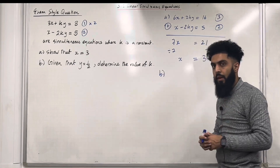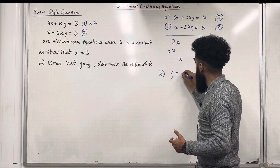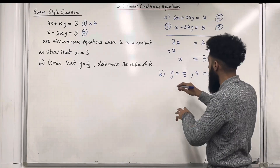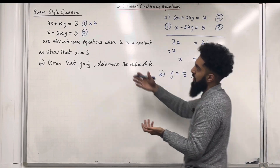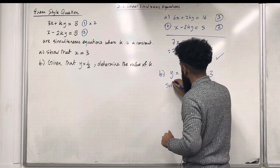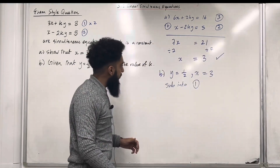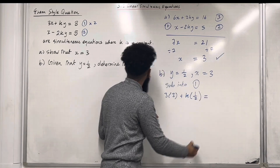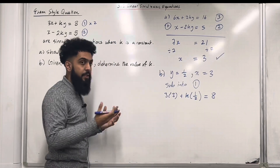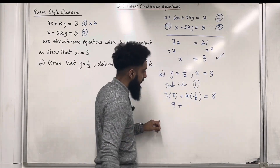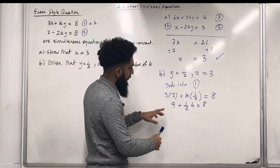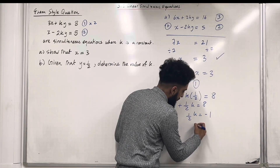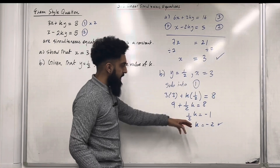Moving on to Part B. Given that y is equal to one half, and also x equal 3, I want to work out the value of k. I can substitute y equal one half and x equal 3 into equation 1 to work out k. So I have 3 multiplied by 3 plus k multiplied by one half, which must equal 8. Cleaning this up: 3 times 3 is 9 plus one half k equal 8. Taking 9 to the right-hand side: one half k is equal to 8 take away 9, which is minus 1. Multiplying both sides by 2, k is equal to minus 2. That is the value of the constant k.